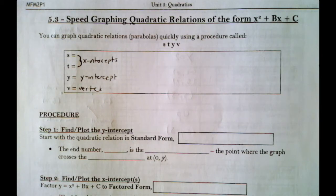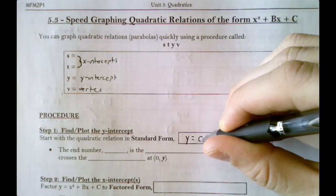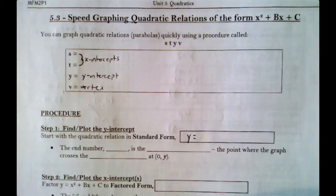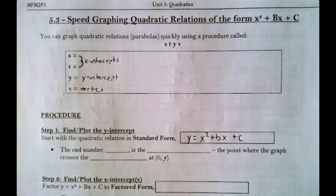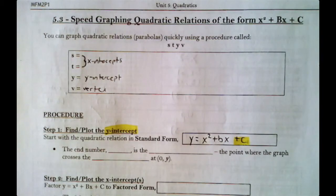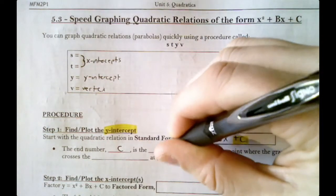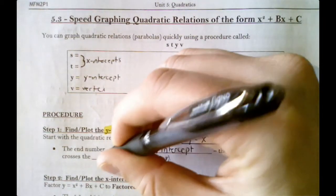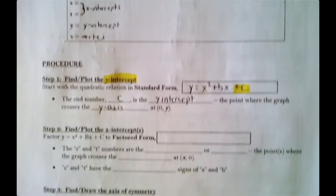Step one is to find and plot the y-intercept. The nice thing about the y-intercept is that if you're given the equation y = x² + bx + c, the y-intercept is always going to be the number at the end — c. That number is the y-intercept; it's the point where the graph crosses the y-axis. So our first step is just to pick out the number at the end of the equation and plot it on the y-axis.